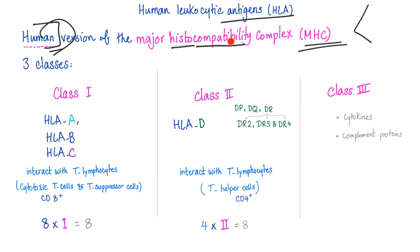We have three classes of MHC. Class 1, class 2, and class 3. Creative. Class 1, they include HLA-A, B, and C. They interact with the T-lymphocyte. Please be specific. The cytotoxic CD8-positive T-cell.